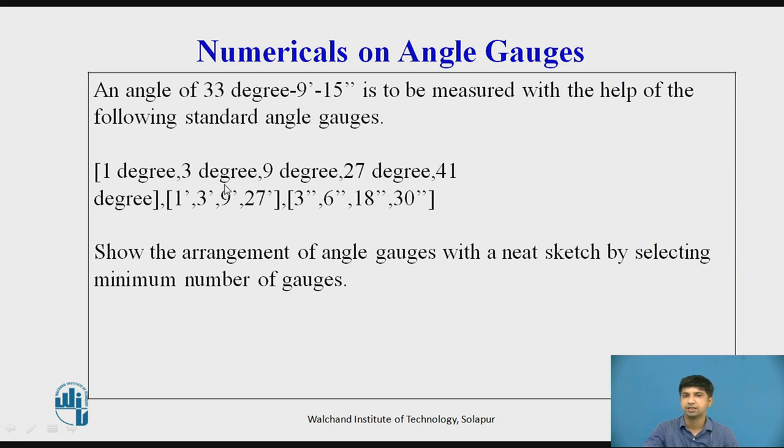Then 36, what should be subtracted? How many degrees should be subtracted? I have 3 degree angle gauge. So 36 minus 3, 33 degree is formed. So the same thing 9 minutes. Okay, 9 minutes angle gauge is present. 15 seconds. So 15 seconds is nothing but 18 seconds minus 3 seconds. It means engraved V should be in opposite direction here.